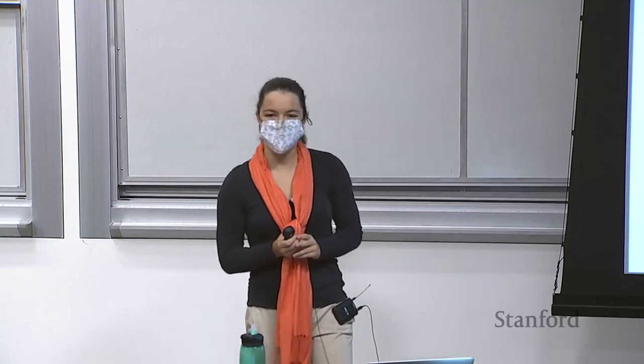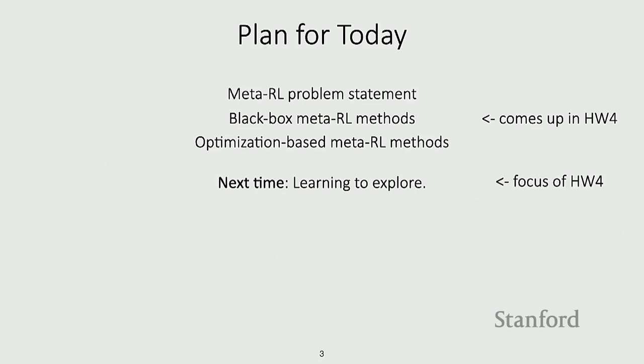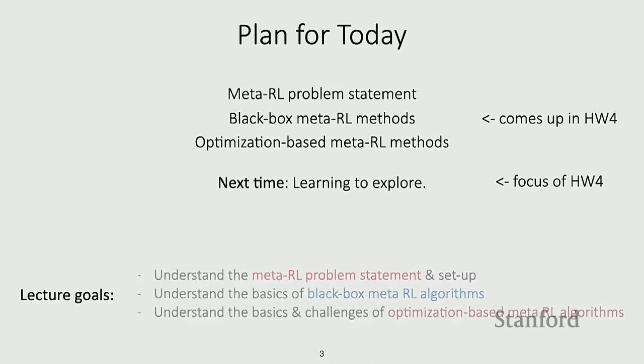Today we're going to be talking about meta-reinforcement learning — the problem statement, and then two classes of methods: black box meta-RL methods and optimization-based meta-RL methods. Black box meta-RL methods are going to come up in Homework 4. On Wednesday we'll also talk about meta-RL, specifically learning how to explore, which will be the focus of Homework 4. The goals of the lecture are to understand the problem statement of meta-RL, how it differs from standard meta-learning, and the basics of black box and optimization-based meta-RL methods.